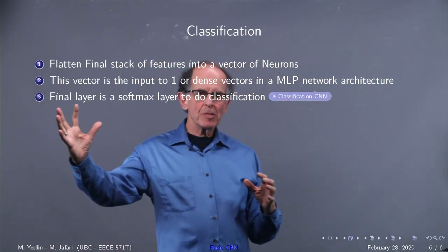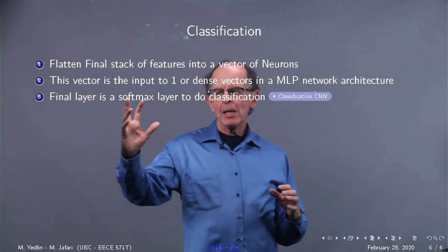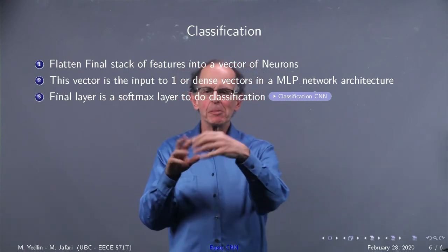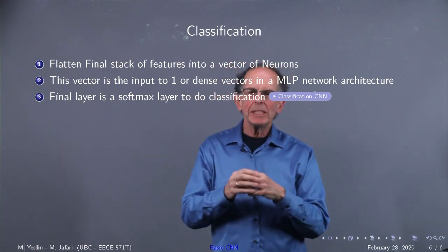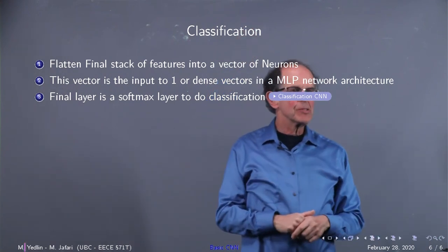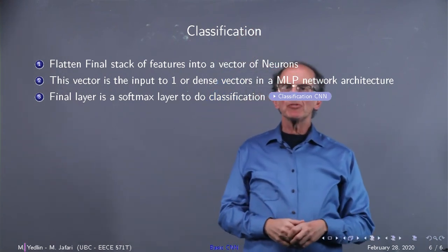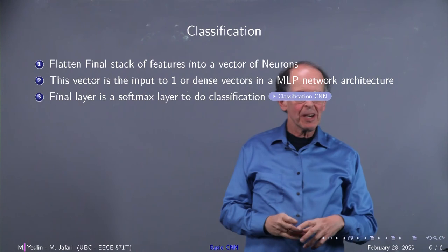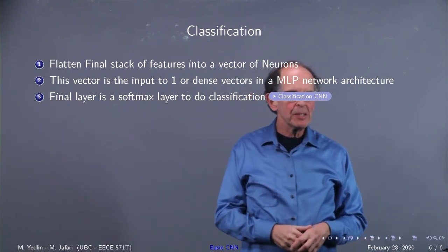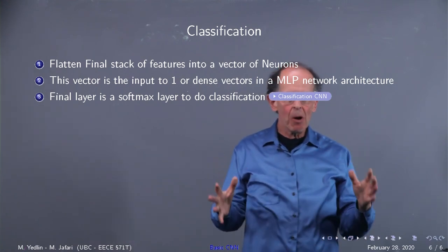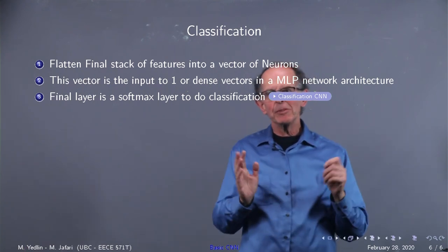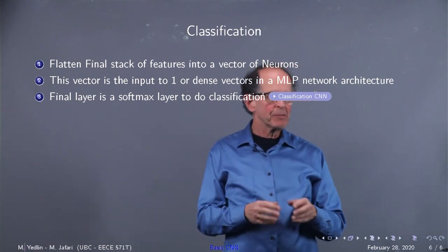After we go through this hierarchical feature extraction, we get to a certain level, four by four by some large number. And then we take that and turn it into a vector that's however long it is. And that's the input to one or more dense vectors in an MLP neural network architecture that we all know, and then feeds to a final layer, say 10 if we're doing digit classification for softmax.